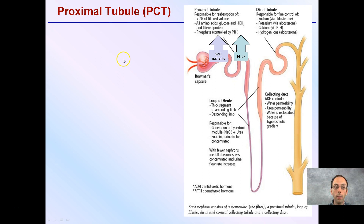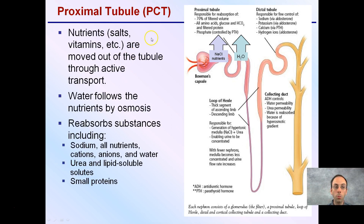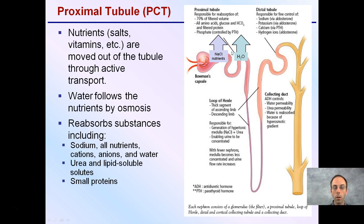That then leads to the PCT, or proximal convoluted tubule, where nutrients, salts, some vitamins, and water can be moved out of the tubule through active transport, which requires energy. However, for water, it's not active transport — that occurs by osmosis. We can also reabsorb substances including sodium, some nutrients, urea, lipid-soluble steroids, and small proteins in our proximal tubule.